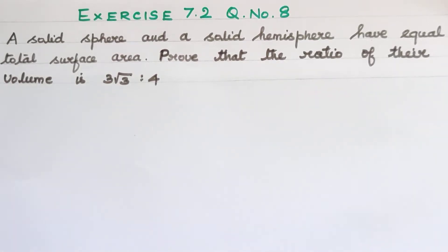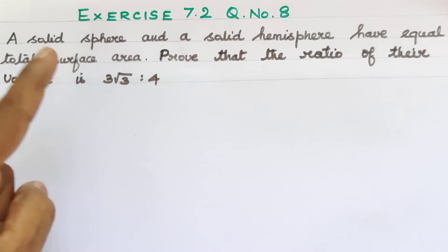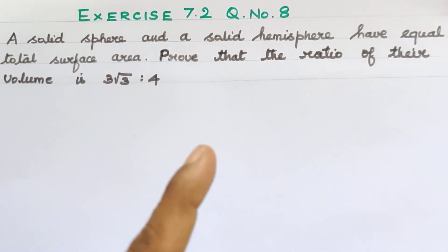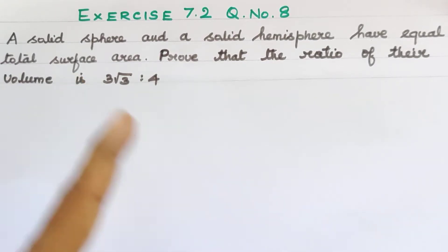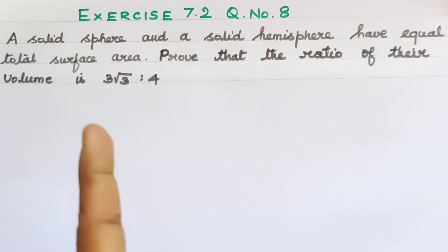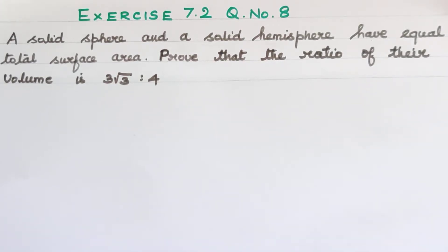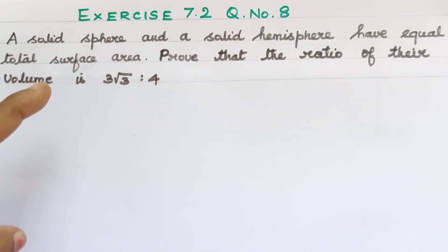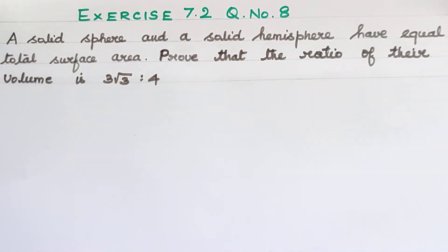In this question, we have 2 different shapes. One is a solid sphere — a spherical shape. And the other is a solid hemisphere, which is half of a sphere. These two have the same total surface area. Using this statement and this hint, we need to prove that the ratio of the volumes of the solid sphere and solid hemisphere is 3√3 : 4.